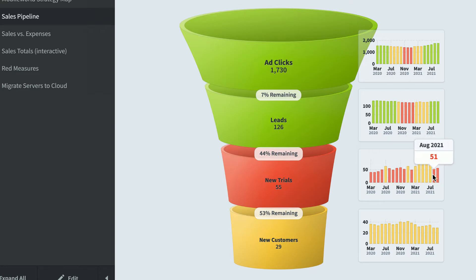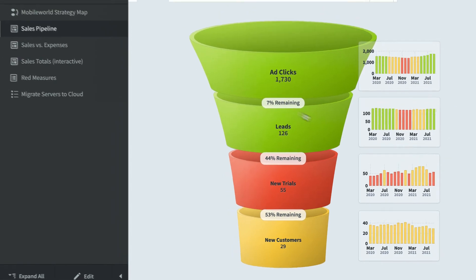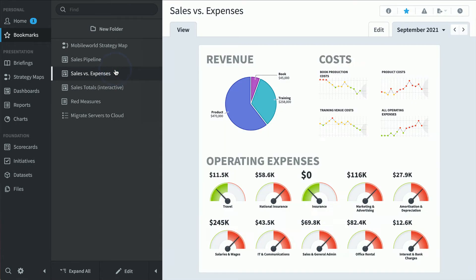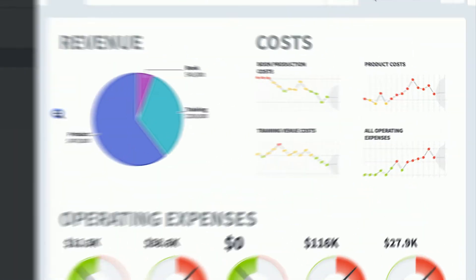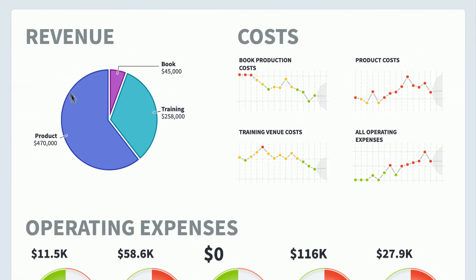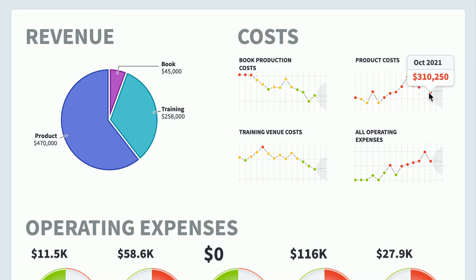New trials are still not doing great. Here's a sales versus expenses dashboard where we can see all the things that feed into revenue like product, training, and book — and here are the costs: book production costs and product costs. Spider Impact is predicting what the values will be in the future, and you can see a 95% confidence interval coming out from the last data point.